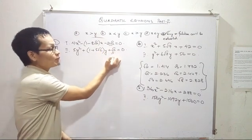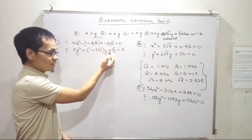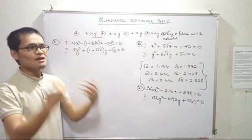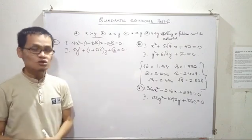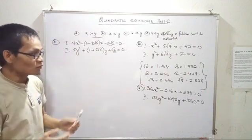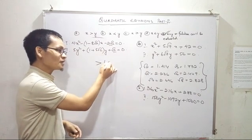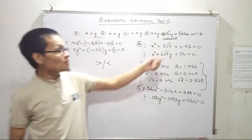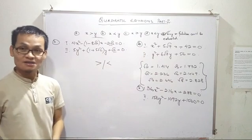Unlike the first class, we have to find values of 2x minus 1 and understand the relationship between the two equations. We can compare values and establish a relationship in answer to this.